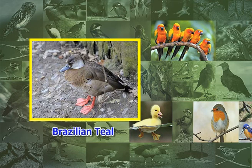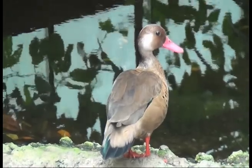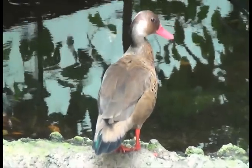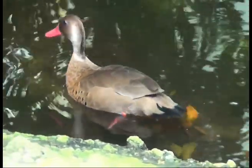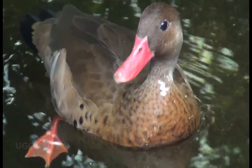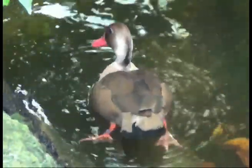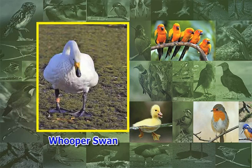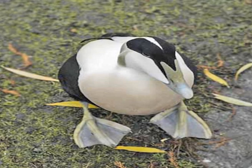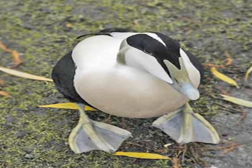Fifth, the Brazilian teal and goosander: they have short legs and webbed feet. The foot has three front toes joined by a fine membrane, allowing these birds to swim easily when the membrane stretches under water pressure; the rear toe is shorter and free. The feet are used as paddles to propel the bird through the water. Sixth, the common eider and whooper swan: their webbed feet make it very difficult for these species to walk or run on the ground.